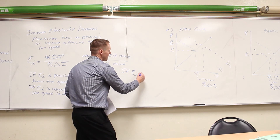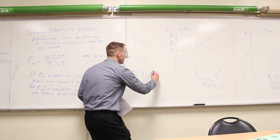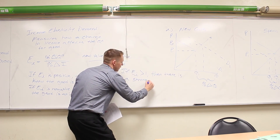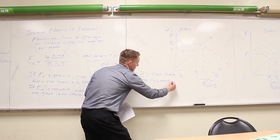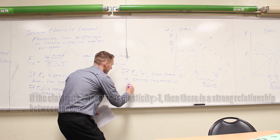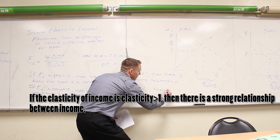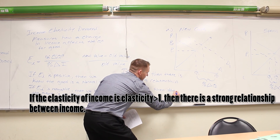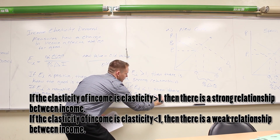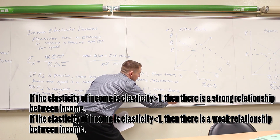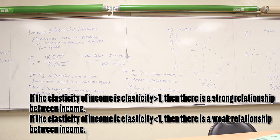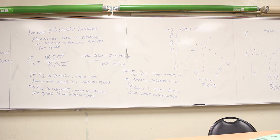If the income elasticity is greater than one, there is a strong relationship between income and demand. If it is less than one, there is a weak relationship. These concepts are important to firms because they want to know how income affects quantity demanded, as well as the cross price elasticity of complements and substitutes, since all of these affect their market.